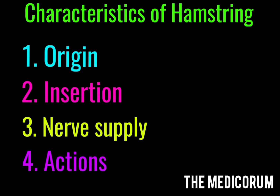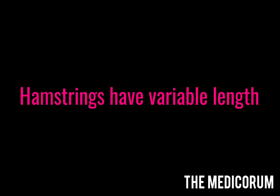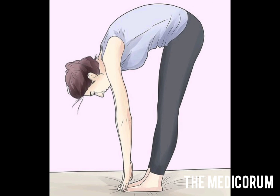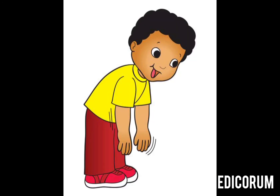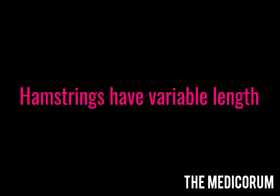We saw four muscles and four characteristics. The four characteristics were origin, insertion, nerve supply, and action. There is also a unique feature of the hamstrings: all of them have variable length. Have you noticed that some persons are able to touch their toes with their fingers while standing straight, whereas some are not? It is not due to their potential, but due to the length of their hamstrings — some may have a short length and some may have a long length.